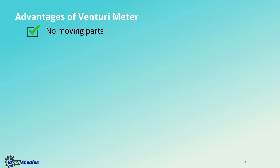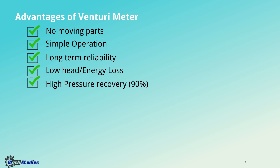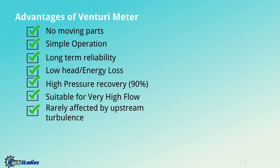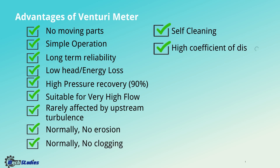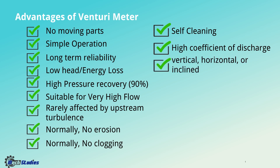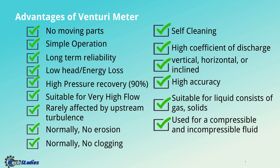Advantages of a Venturimeter include: no moving parts, simple operation, long-term reliability, low head or energy loss, high pressure recovery (around 90%), suitable for very high flow, rarely affected by upstream turbulence, normally no erosion, no clogging, self-cleaning, high coefficient of discharge, can be used in vertical, horizontal, and inclined configurations, high accuracy, and suitable for liquids containing gas or solids, as well as compressible and incompressible fluids.